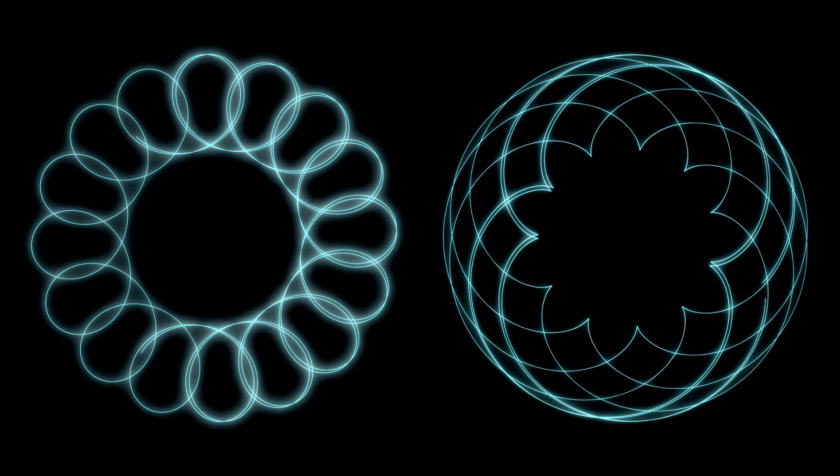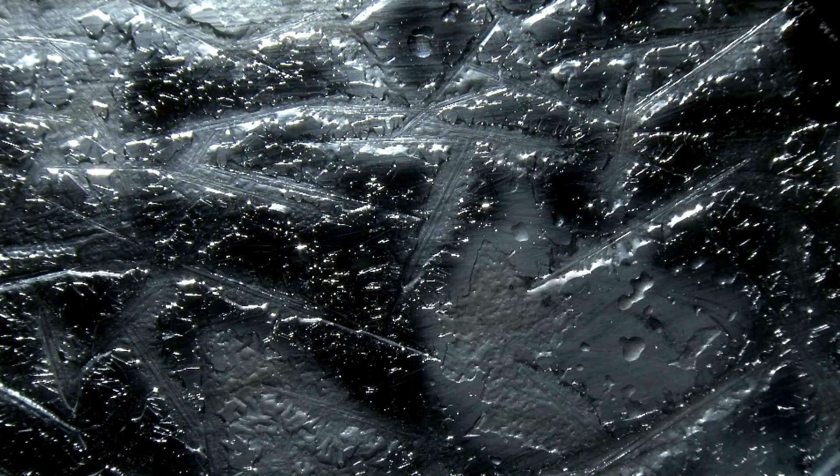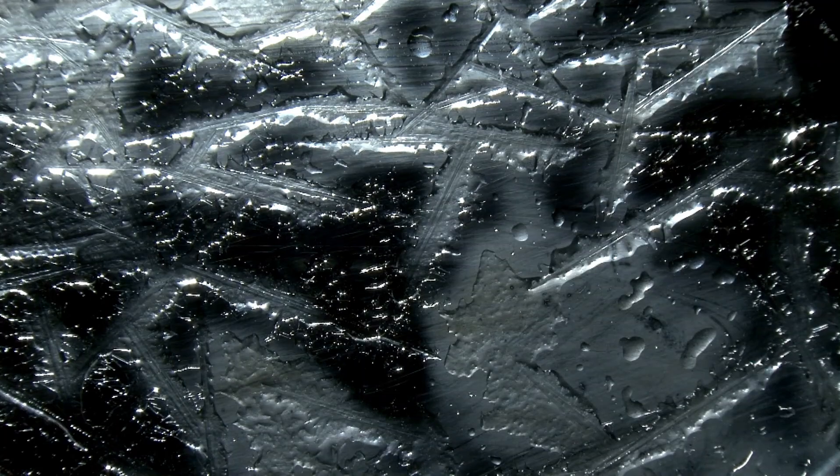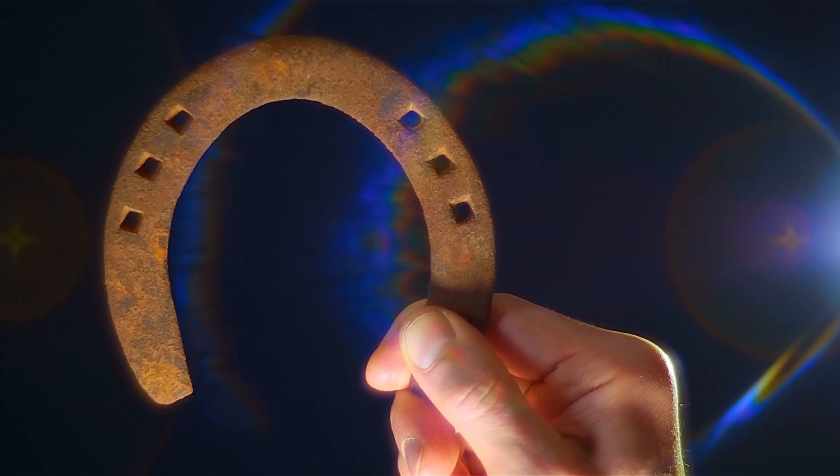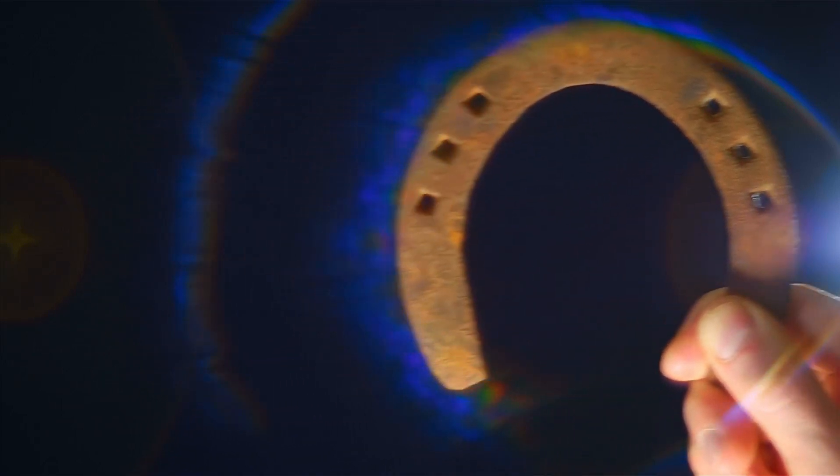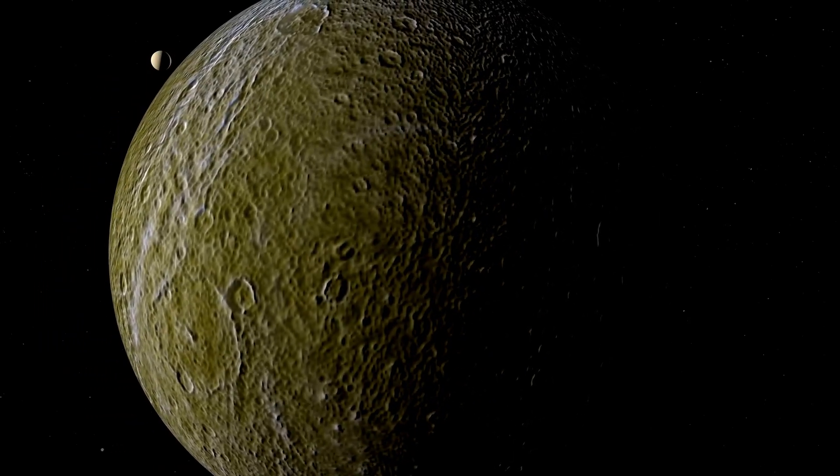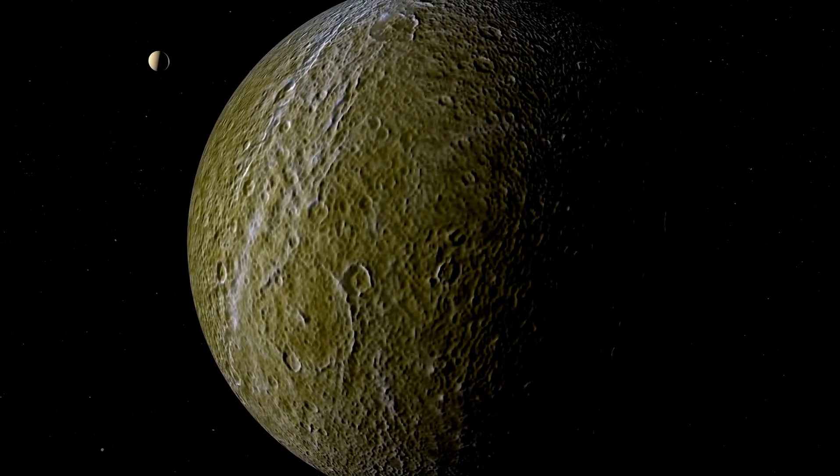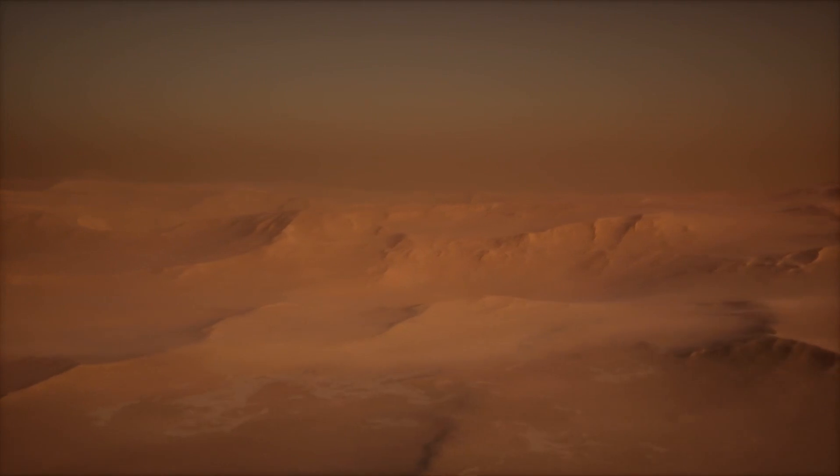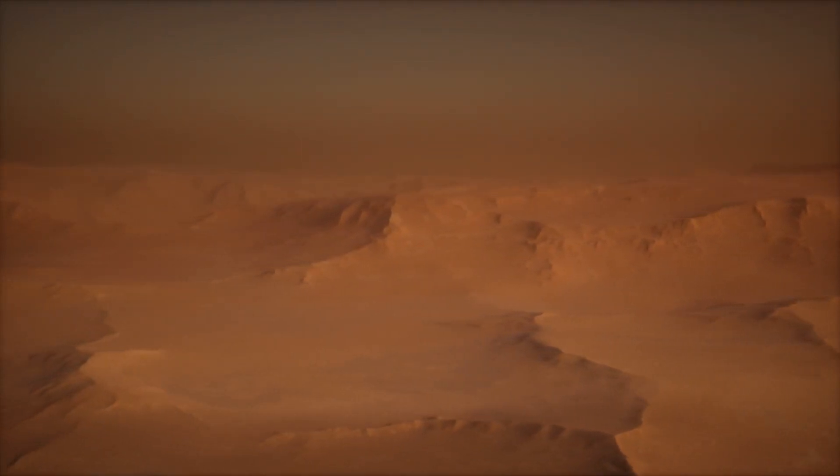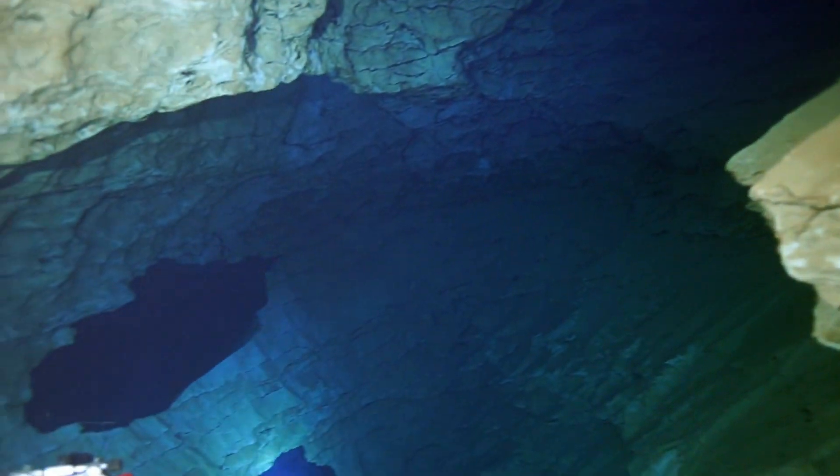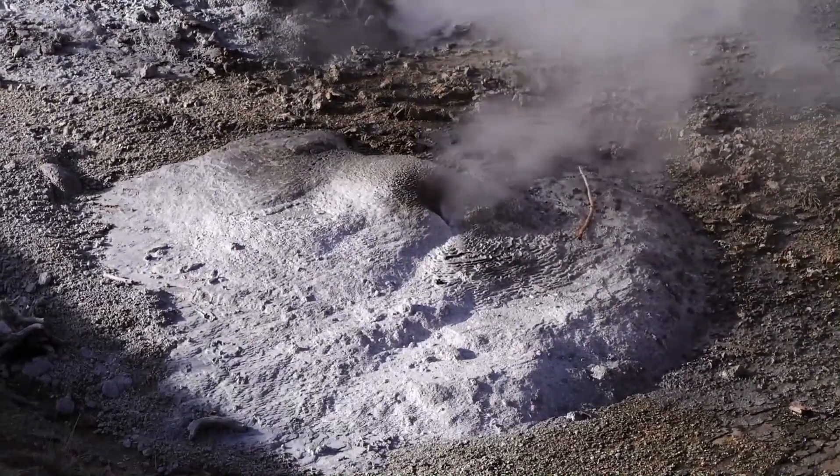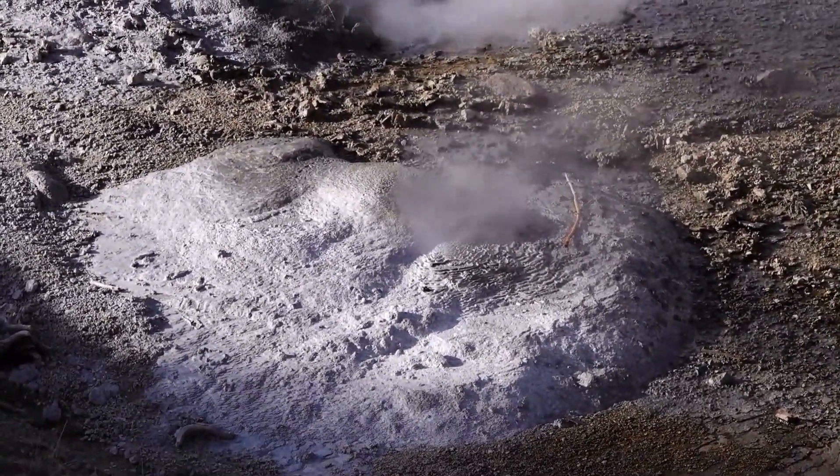Saturn's moons are equally fascinating. Among its 145 confirmed moons, Titan and Enceladus stand out as potential havens for extraterrestrial life. Titan, the largest moon, boasts a thick atmosphere and surface lakes of liquid methane. Beneath this alien landscape lies a subsurface ocean of liquid water. Enceladus, with its icy surface and geysers spewing water vapor and organic molecules into space, offers even more compelling evidence of habitability. This combination of water, heat, and organic compounds makes Enceladus one of the most promising places to search for life in our solar system.